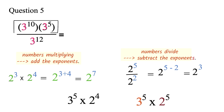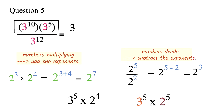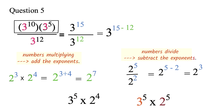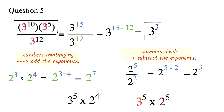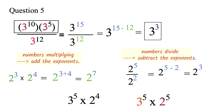3 exponent 10 is multiplying 3 exponent 5, so we can add the exponents to get 3 exponent 10 plus 5, which is 3 exponent 15. This 3 exponent 15 is then divided by 3 exponent 12. When terms with the same base divide, we subtract the exponents: 3 exponent 15 minus 12, which is 3 exponent 3. They could also require you to further simplify 3 exponent 3, which would be 3 times 3 times 3, giving us 27.